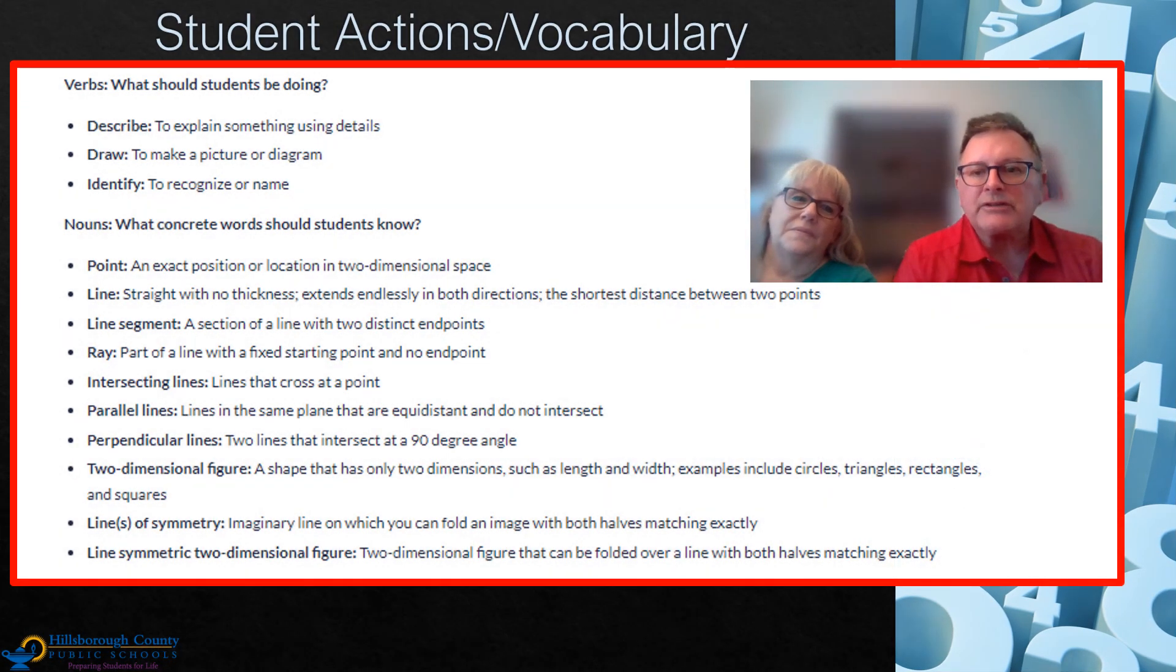This unit, unit 14 and unit 15, which is on quadrilaterals, is very vocabulary, academic language heavy. Looking at the actions here, students are describing attributes using academic vocabulary. They are drawing and identifying the words you see there, which I would want front and center throughout this unit as students are exploring these ideas and making sense of them. Yes, and a lot of this vocabulary is going to be brand new to a third grader. They may have heard of symmetry before if their teacher touched on it last year, but most of the rest of that vocabulary is going to be brand new in third grade.